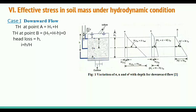We can calculate the total stress. Total stress is the summation of the weight of all material above that point. At point A, there is water of height H1, so we write H1·γw. Pore water pressure is simply the unit weight of water multiplied by the head of water, which is H1·γw. So the effective stress at point A is zero.